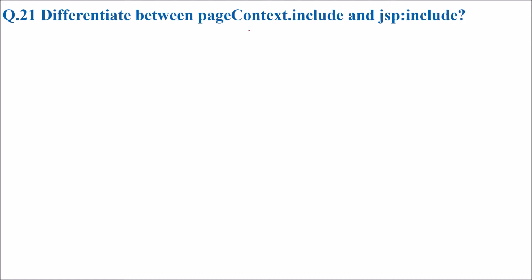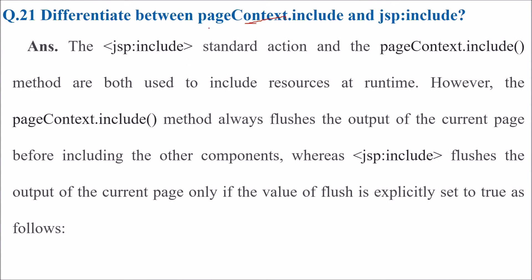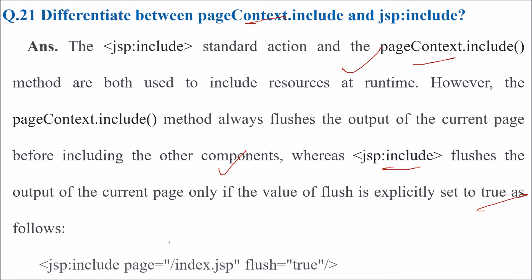Next: differentiate between pageContext.include and JSP include. Both the JSP include standard action and the pageContext.include method are used to include resources at runtime. However, the pageContext.include method always flushes the output of the current page before including other components, while JSP include flushes the output of the current page only if the value of flush is explicitly set to true.